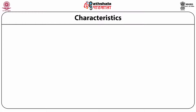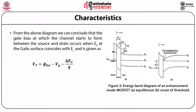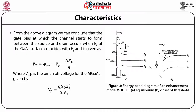Characteristics of ModFET. From this diagram we can conclude that the gate bias at which the channel starts to form between the source and the drain occurs when EF at the gallium arsenide surface coincides with EC. It is given by VT = φ_BN − VP − ΔEC/Q, where VP is the pinch-off voltage for the aluminium gallium arsenide, given by VP = QND·χd² / (2εs).